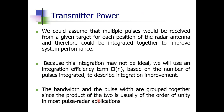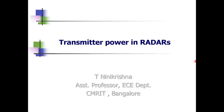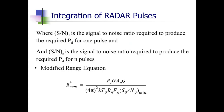Because we use post-detection integration, the integration is not ideal, hence we use the term integration efficiency ei(n), where n is the number of pulses per scan. The bandwidth and pulse width are grouped together in the expression. Here, (S/N)₁ is the SNR required to produce a probability of detection PD for one pulse, and (S/N)n is the SNR required to produce PD for n pulses.